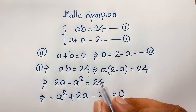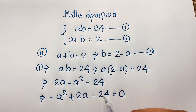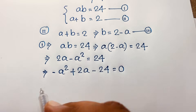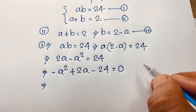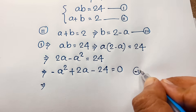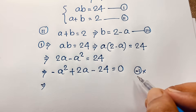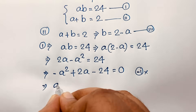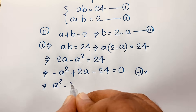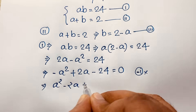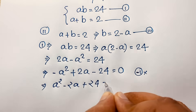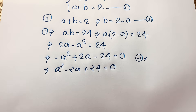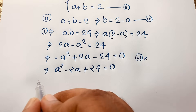I just move positive 24 to the left side, it becomes negative 24. So we find a nice quadratic equation. Now I multiply both sides by negative 1, so it will be positive a squared minus 2a plus 24 is equal to 0. Now it is a nice quadratic equation.